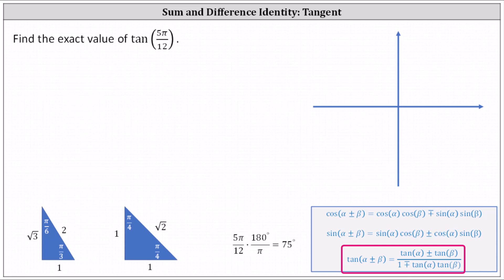The sum and difference identity for tangent is shown here below. The first step is to find two angles that are multiples of pi divided by six or pi divided by four, or 30 degrees and 45 degrees, that have a sum or difference equal to five pi divided by 12 radians, which equals 75 degrees.